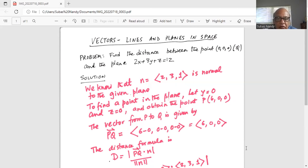Now we will find a vector from P to Q is given by vector PQ is x2 minus x1, 6 minus, the given point is Q, 0, 0, 0. So 6 minus 0, then 0 minus 0, and 0 minus 0. So the vector PQ directional numbers are 6, 0, 0.